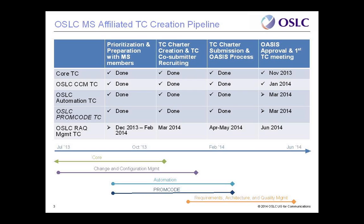Siemens and Creative Intellect Consulting are also on the steering committee. They provide direction to help grow the community and provide oversight to the various technical committees that develop specifications affiliated with the member section. Currently we have two TCs already up and running: the CORE technical committee, launched in November, and the Change and Configuration Management TC, launched in January. In process right now are the Automation and PROMCODE technical committees.